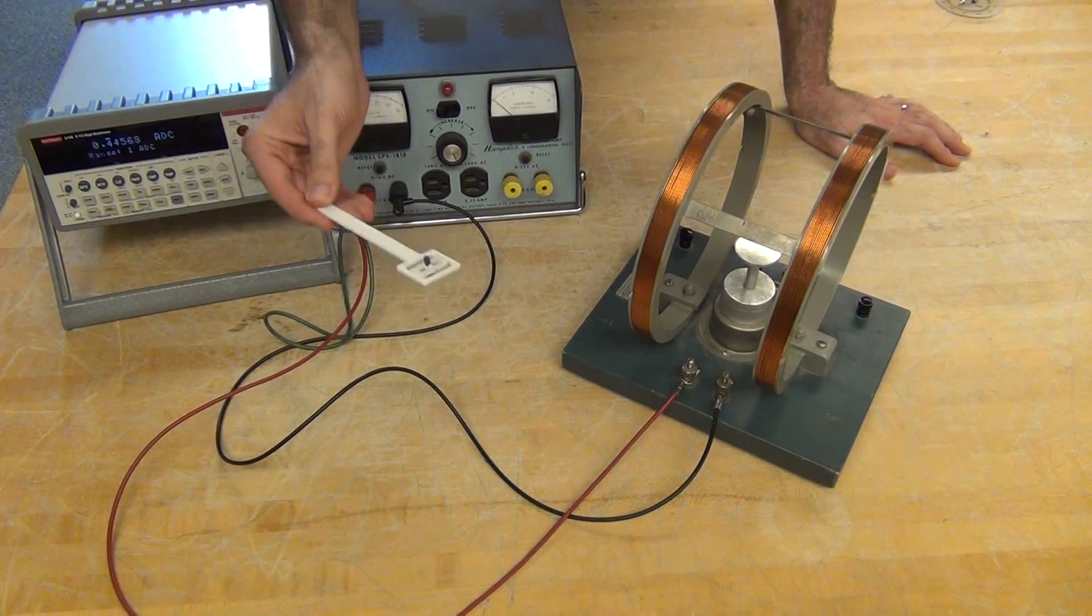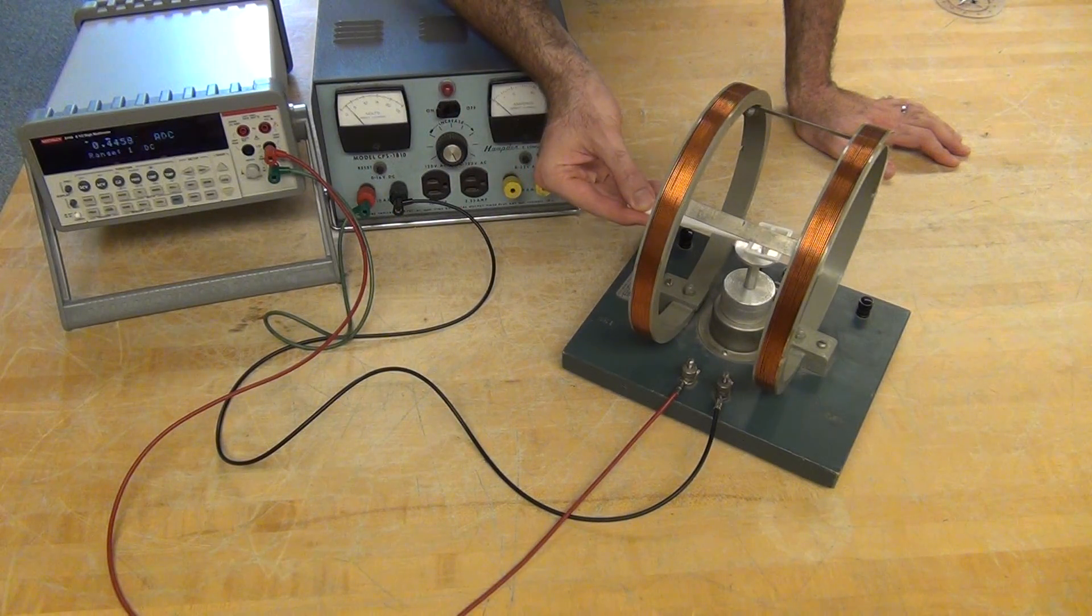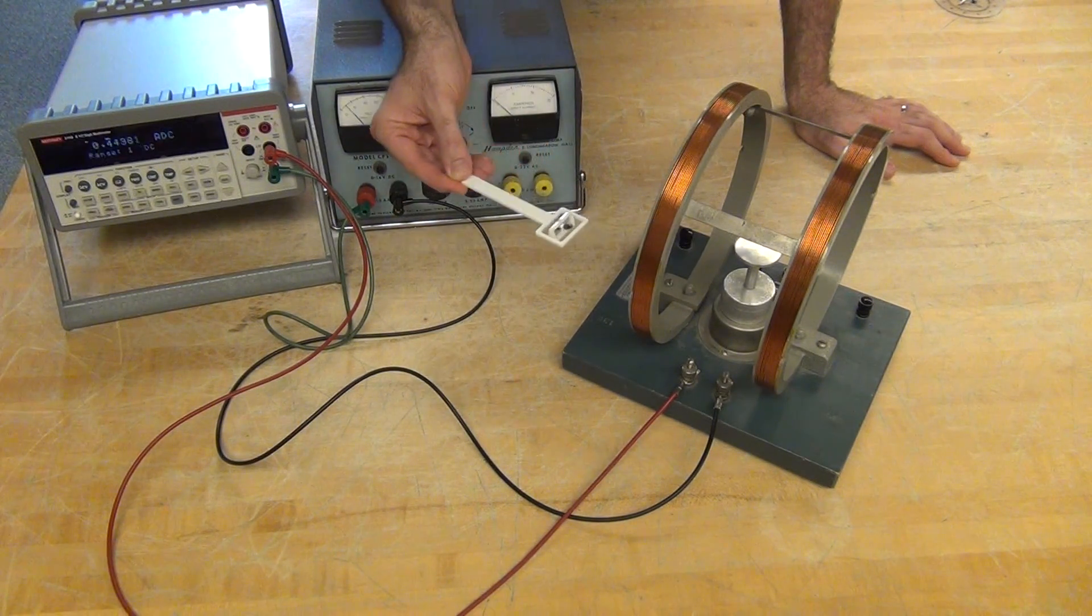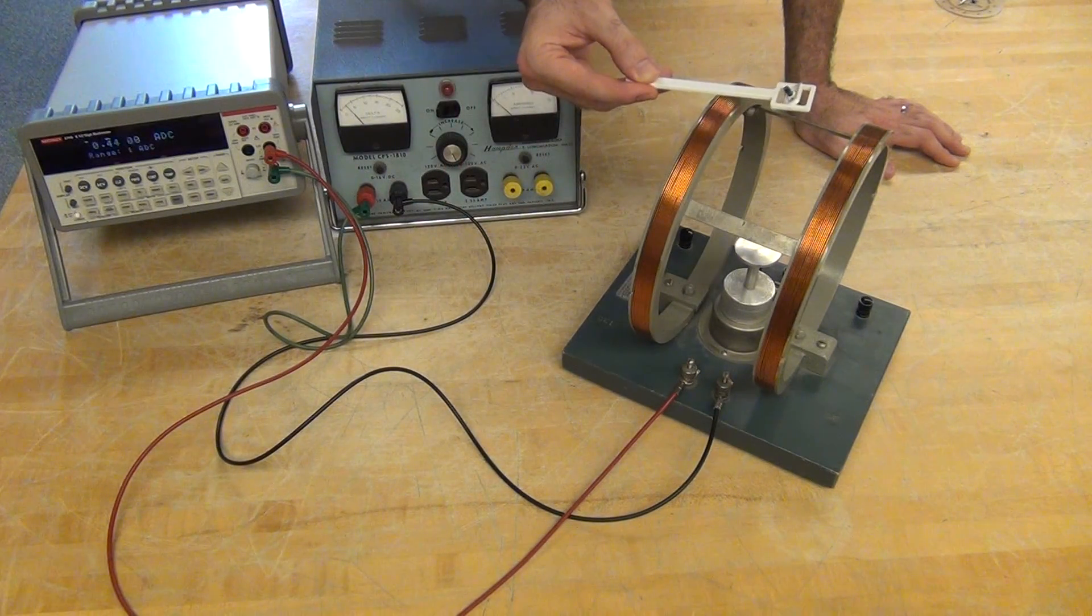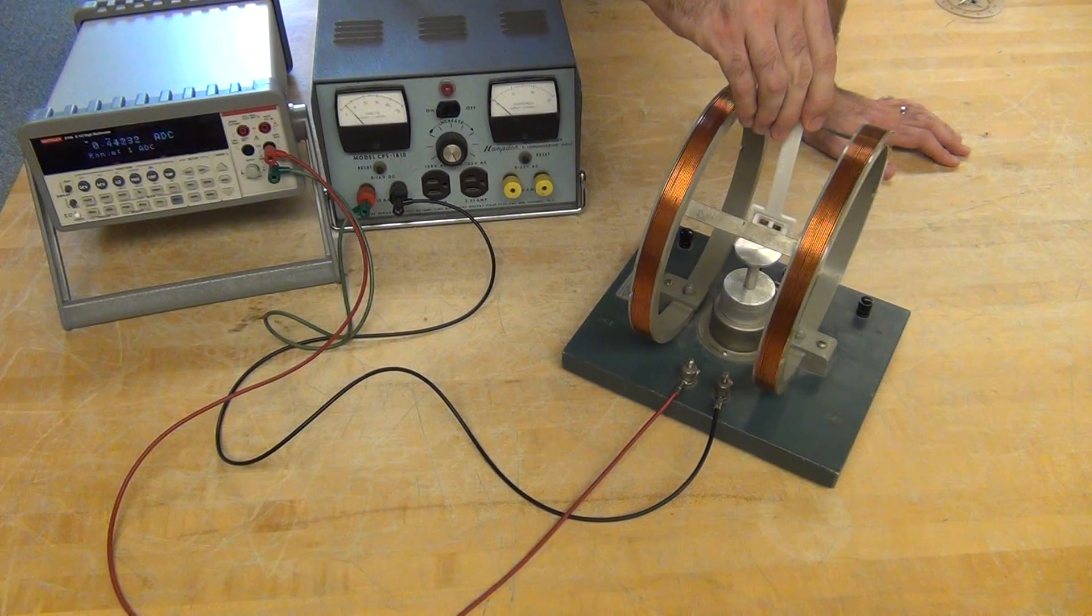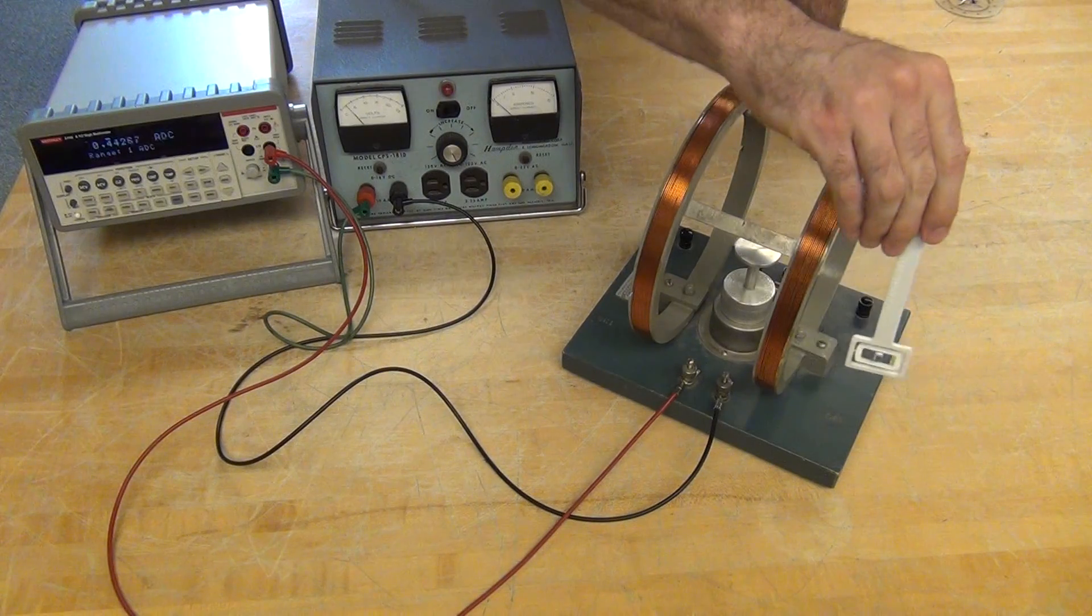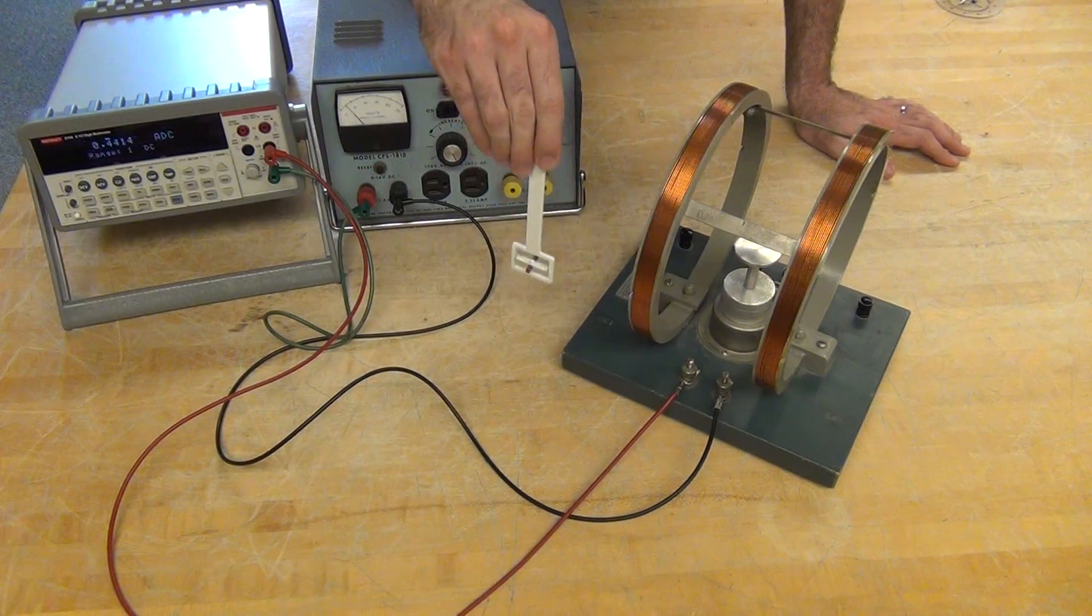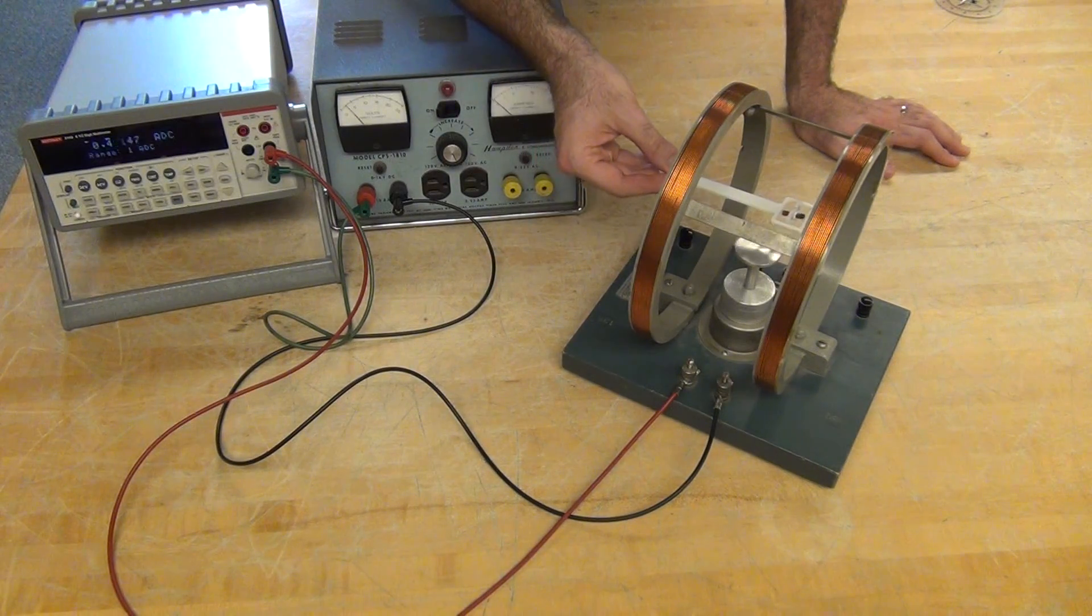Then we can use our Magna Probe and look at the magnetic field inside, around and outside. We'll note that the magnetic field changes direction on the inside compared to the outside, and I can map that field in three dimensions around my coil and inside my coil.